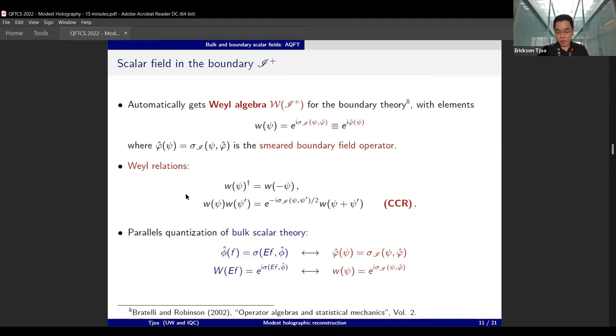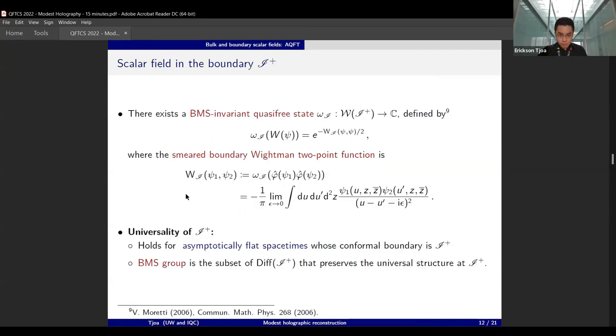This is really one beautiful way of thinking of quantization using symplectically smeared operators, because without the symplectic smearing, this is not obvious at all how to proceed with the boundary. What's even more impressive is that there is a BMS-invariant quasi-free state—remember, BMS group is infinite dimensional—acting on the Weyl algebra of the boundary, defined exactly the same way as the bulk operator, that has a very universal form in the smeared version.